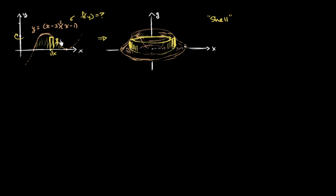The height of the shell is going to be the value of my function, f of x — in this case, x minus 3 squared times x minus 1. To figure out the volume of a shell, we find the circumference of the cylinder, multiply that by the height to get the outside surface area, then multiply by that infinitesimally small depth dx to get the volume of our shell.